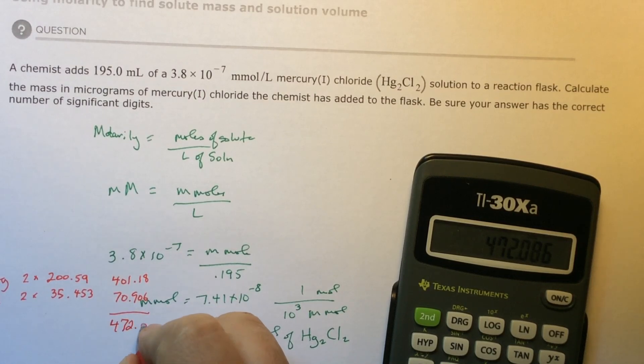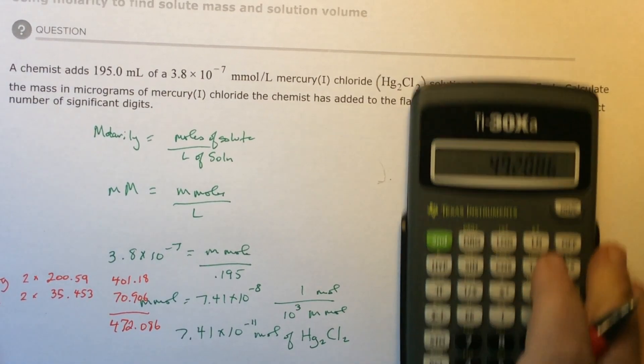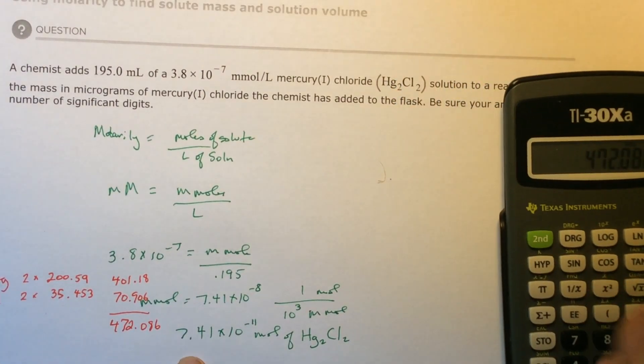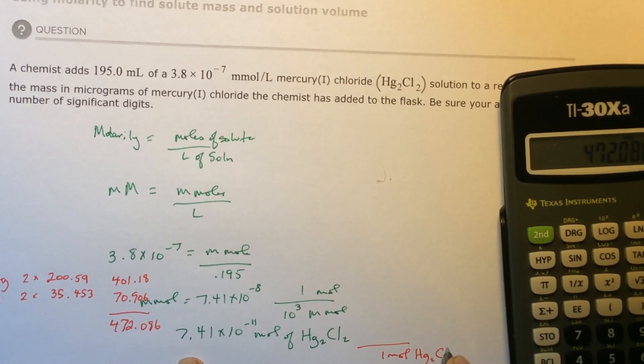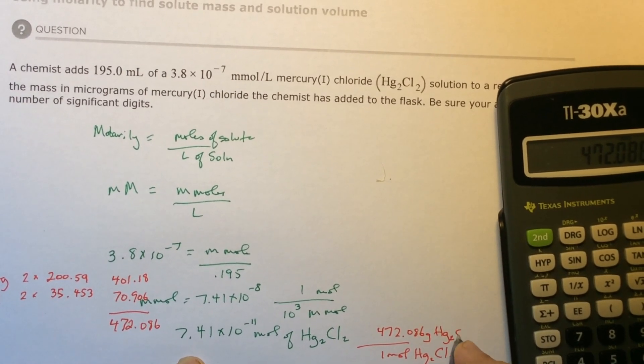472.086. So I have this many moles. And in one mole of Hg2Cl2, I have 472.086 grams of Hg2Cl2.